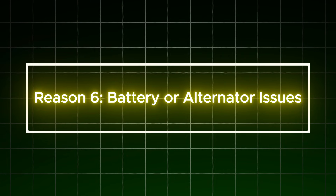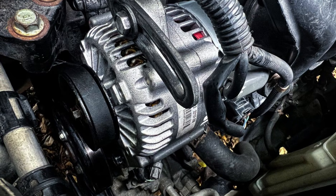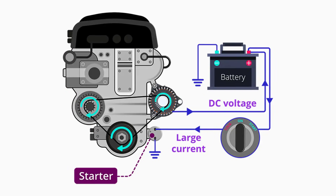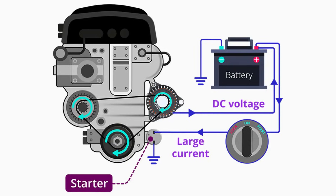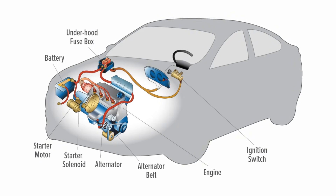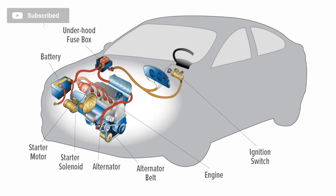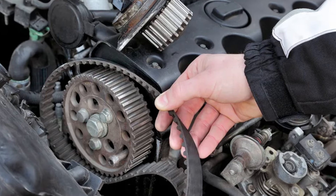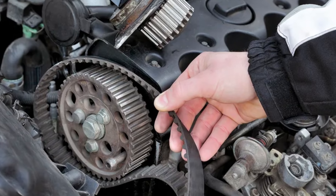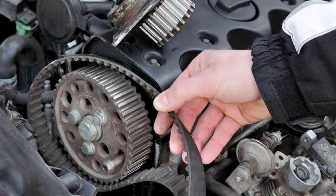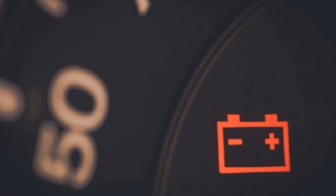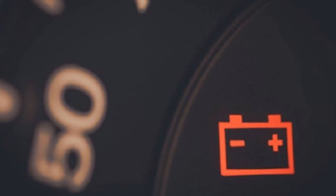Reason 6: Battery or alternator issues. Battery or alternator issues can also lead to unstable RPM fluctuations at idle. The alternator is responsible for converting the engine's mechanical energy into electrical energy, charging the battery, and supplying power to the vehicle's electronic systems, including the ECU and various sensors. When the alternator malfunctions — perhaps due to a seized pulley or a faulty voltage regulator — it fails to generate sufficient voltage, especially at idle. This deficiency results in a weak battery, which in turn causes erratic sensor behaviour and improper fuel injection, ultimately leading to fluctuating engine RPMs.